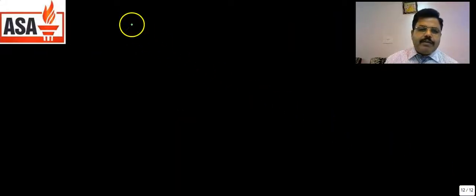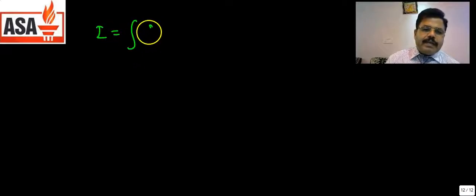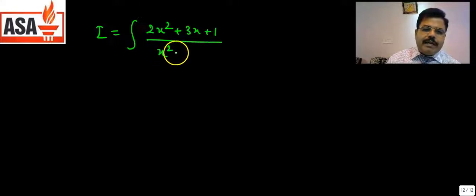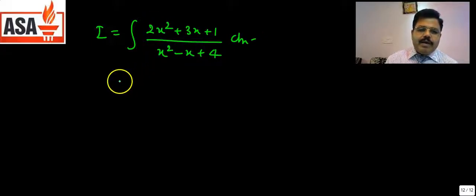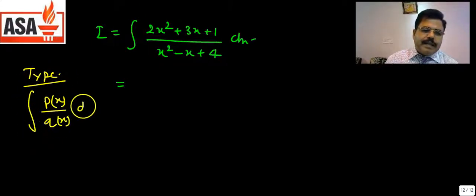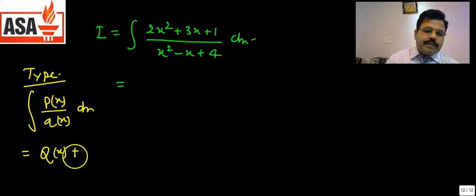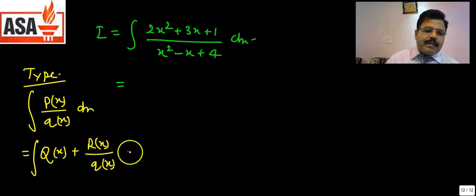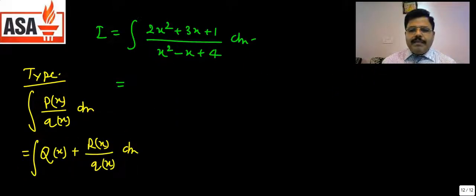Now if the question becomes an algebraic function, like ∫ (2x² + 3x + 1)/(x² - x + 4) dx, then what do you do? Here also you first divide. The general rule: if you have ∫ p(x)/q(x) dx, write it as quotient + remainder/q(x), arrange in this pattern, then integrate.